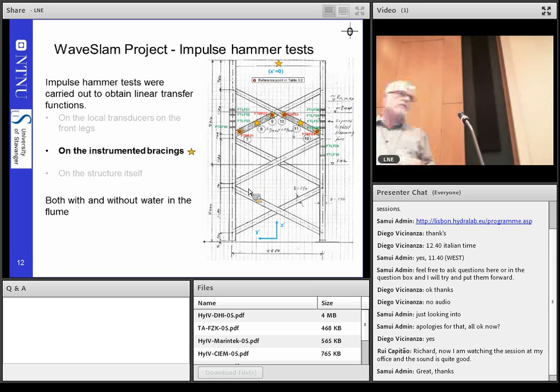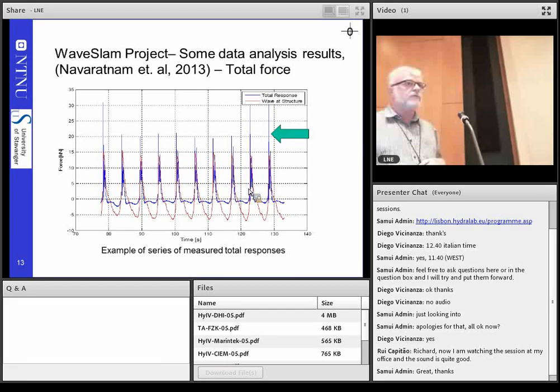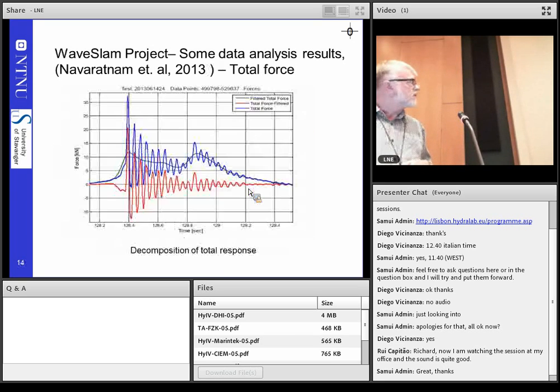So these are some of the results we have. These are the wave at the structure and the total response. That is this kind of sum of the four force cells users measured in each corner. And we then have several. These are ten events in one run. And we have done some analysis of the last one. And we have a report and posted to this project on this.